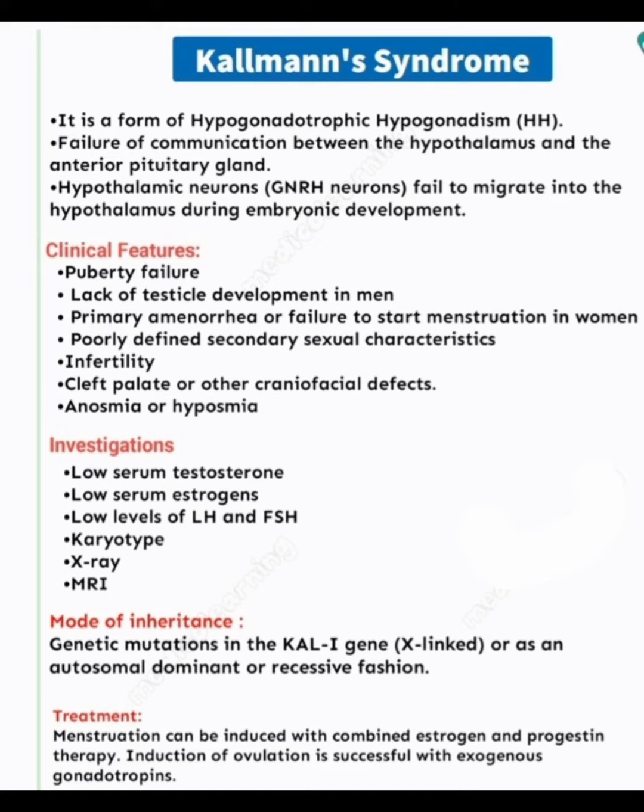Treatment of Kallmann's syndrome includes induction of menstruation with combined estrogen and progestin therapy. Induction of ovulation is successful with exogenous gonadotropins.